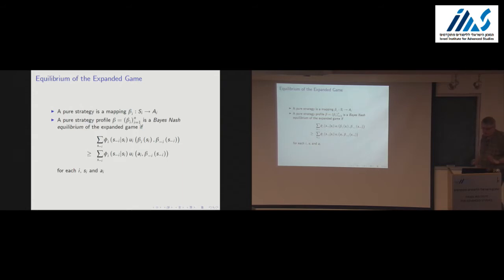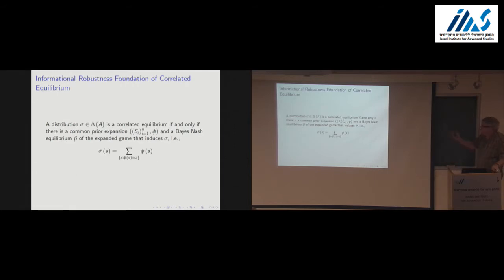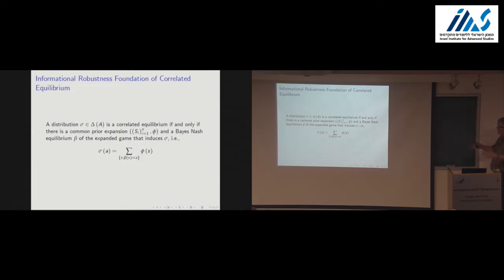That's Bayes-Nash equilibrium. Under the common prior assumption, we're back to the basis of correlated equilibrium — absolutely. A classic observation — this is a stripped-down version of what Aumann's 1987 correlated equilibrium paper said — we can say that a distribution over actions is a correlated equilibrium if and only if we can come up with some expansion. That expansion consisted of a specification for each agent of a set of signals and a probability distribution over signal profiles.